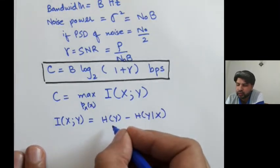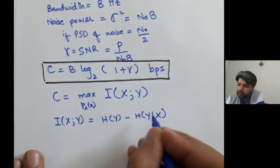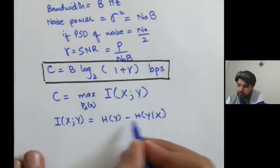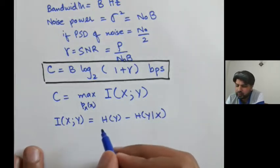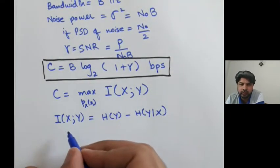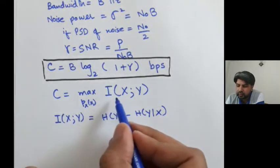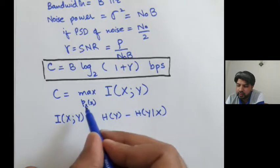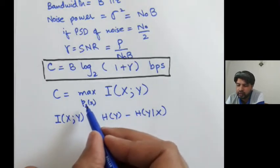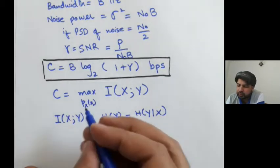And Shannon proved that the capacity C is nothing but the mutual information between X and Y, maximized over all possible distributions of the input.